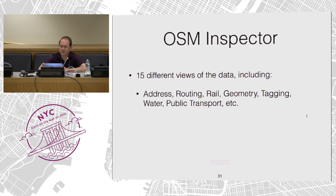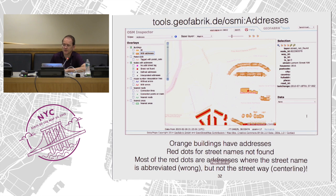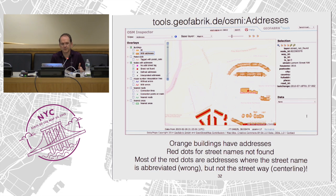Another tool is OSM Inspector. It offers 15 different views of the data, including addressing, routing, rail, geometry, tagging, public transport, etc. The addressing view is my current favorite. I'm showing orange buildings that have addresses, and red dots for street names of addresses that aren't matching the way — a disconnect between the address on the building and the street running outside the front of the building. The reason is the import is using abbreviated addresses, which is wrong, while the street names on the ways are spelled out, which is correct.